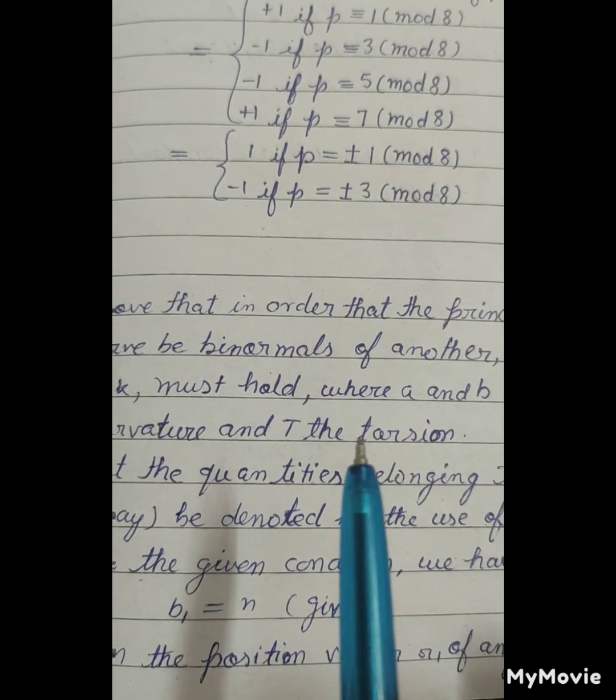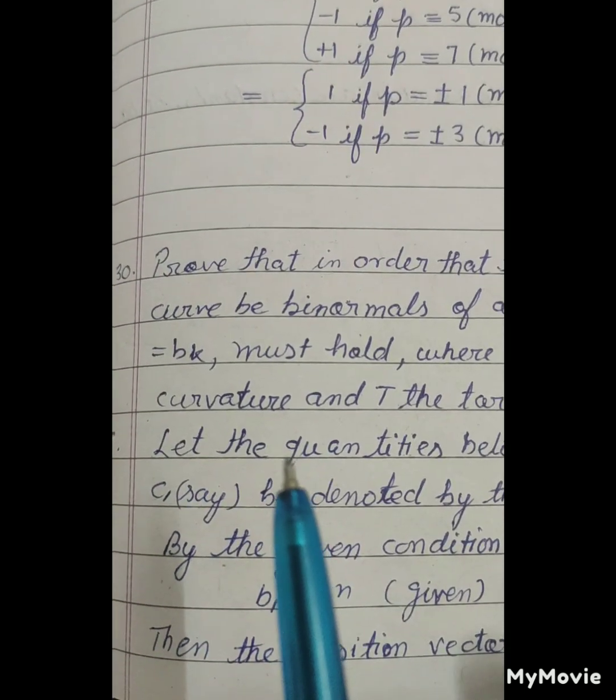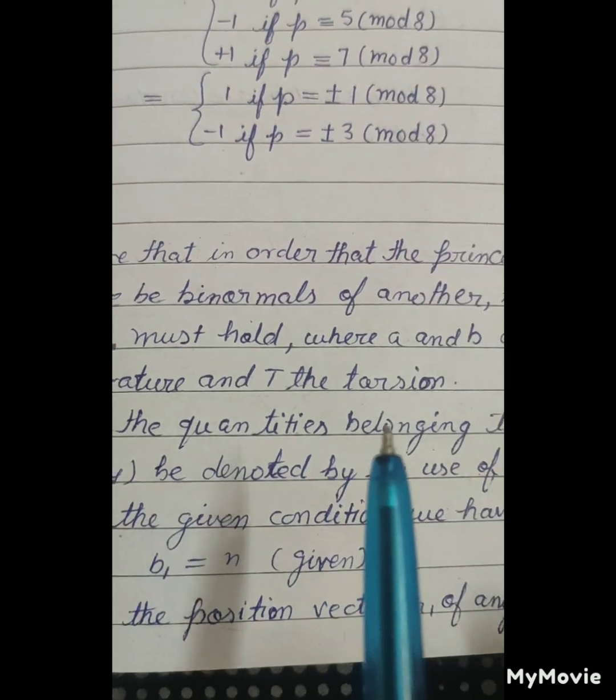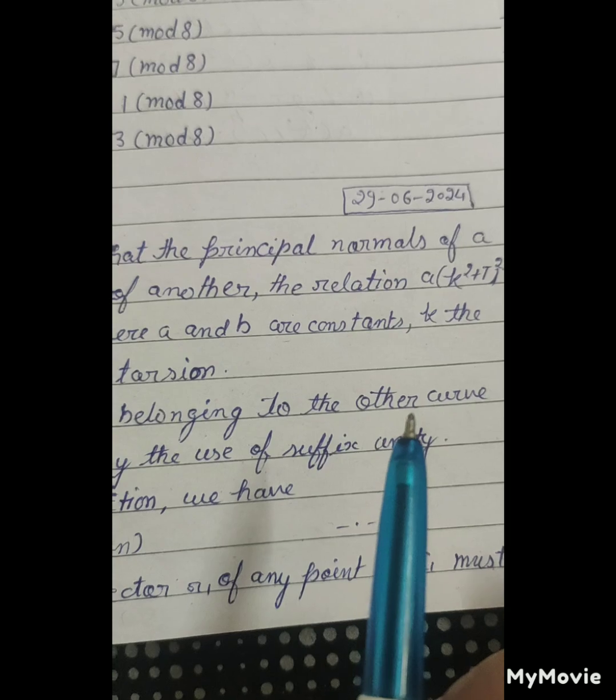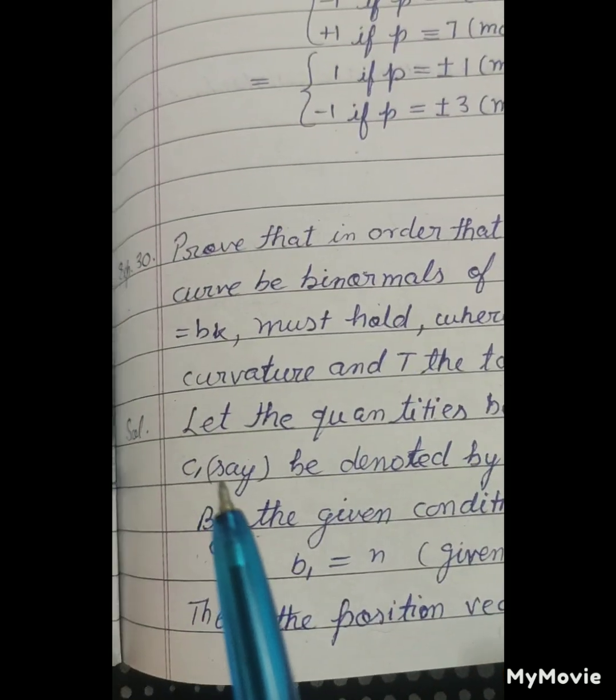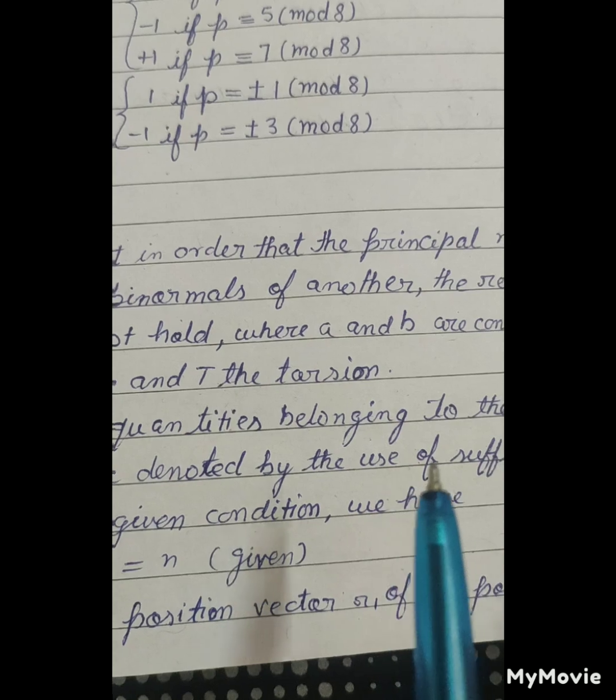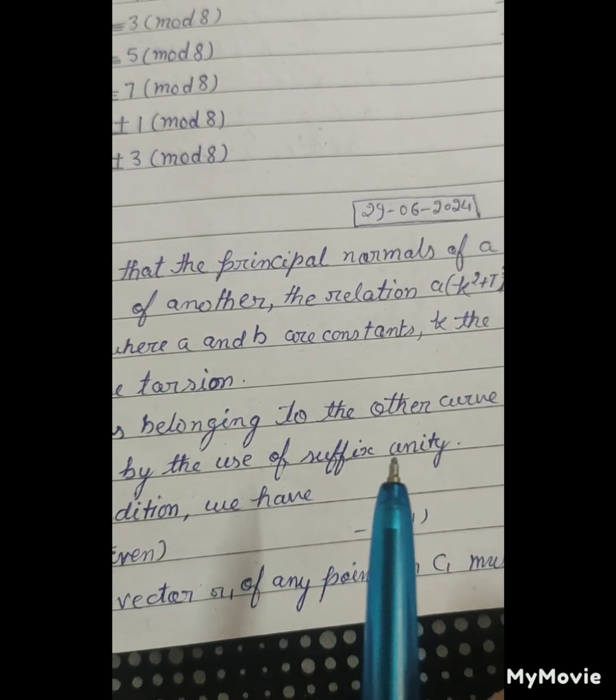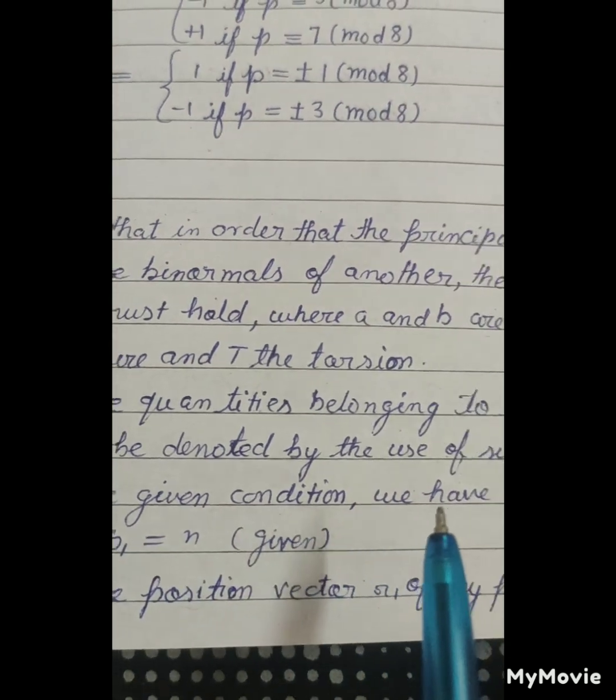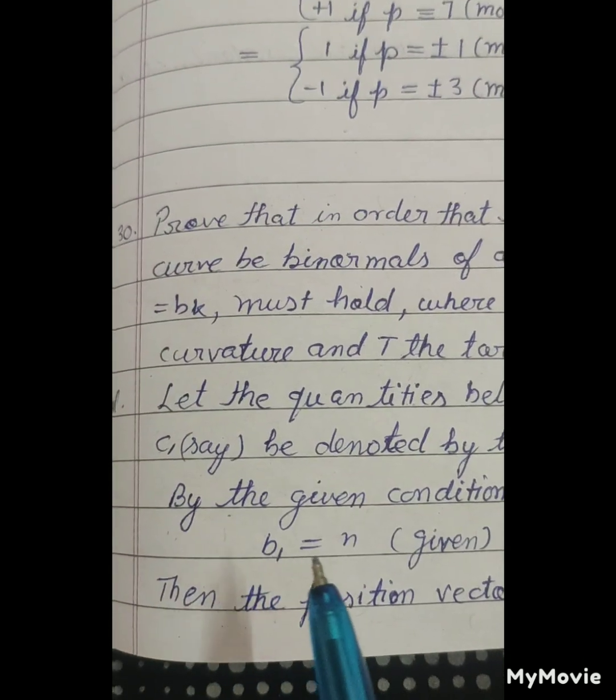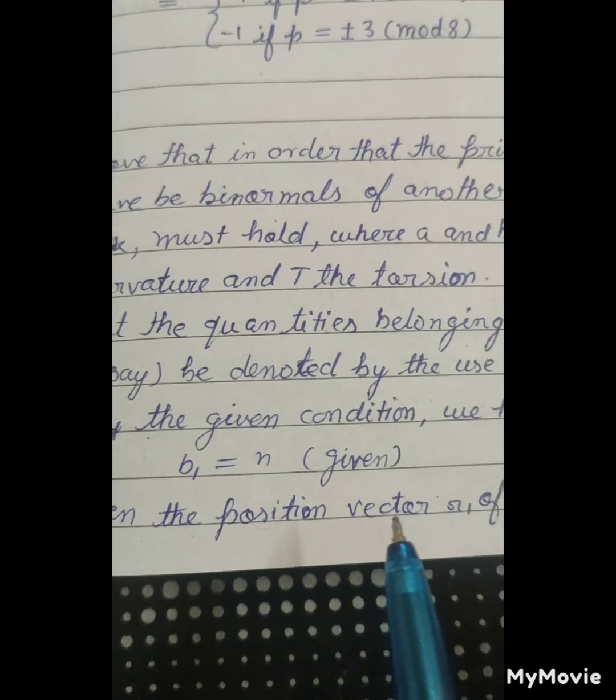Solution: Let the quantities belonging to the other curve C₁ be denoted by the use of suffix 1. By the given condition, we have b₁ = n (given). Then the position vector r₁ of point on C₁